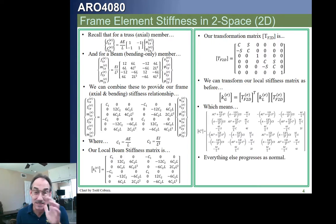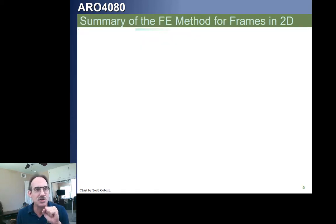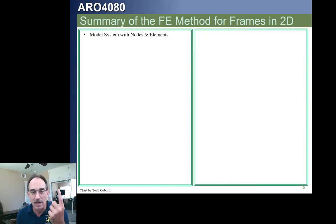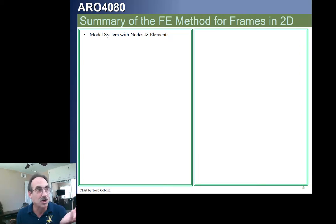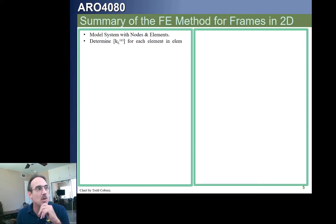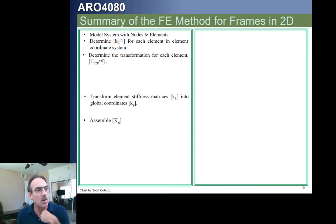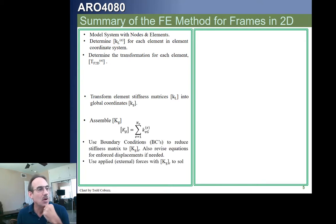Once we've done all this, everything else is the same as what we've already been doing. Let's summarize our method for two-dimensional frames. Since this is a two-dimensional frame, we can use this approach to analyze trusses, beams, or two-dimensional frame elements. First, we model our system with elements and nodes. We determine the local stiffness matrix for each element — we now just have a new type to use. We determine the transformation matrix for each element. We transform the stiffness matrix into global coordinates and assemble the global stiffness matrix.